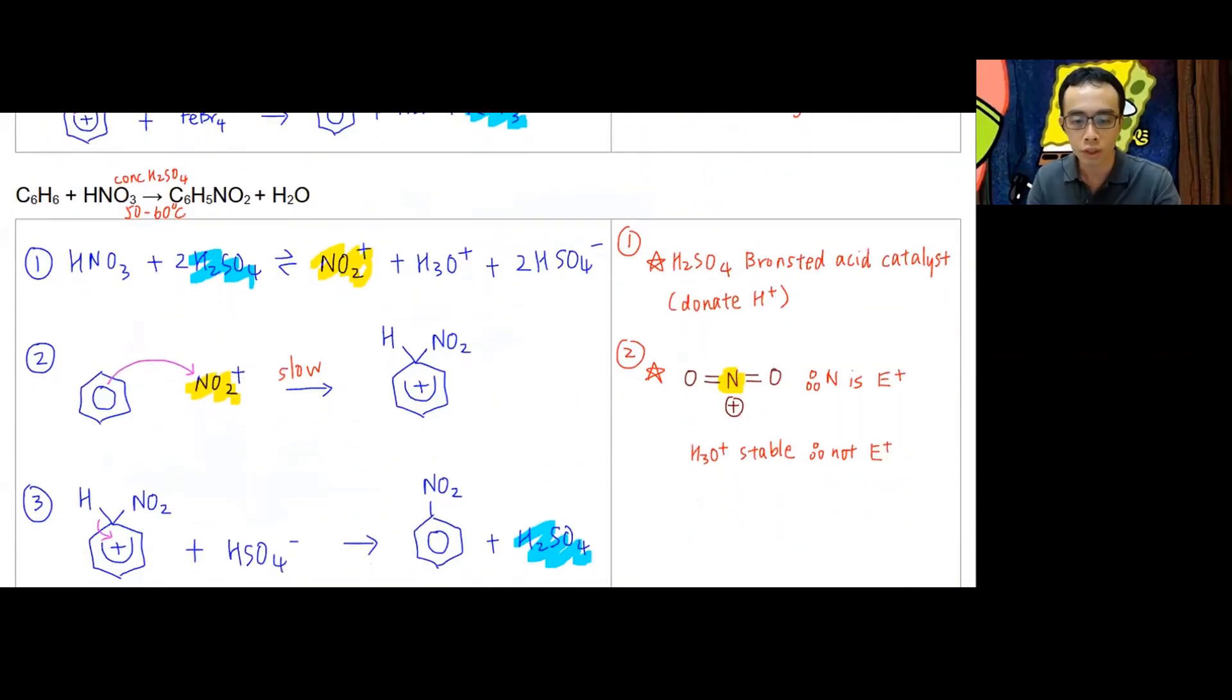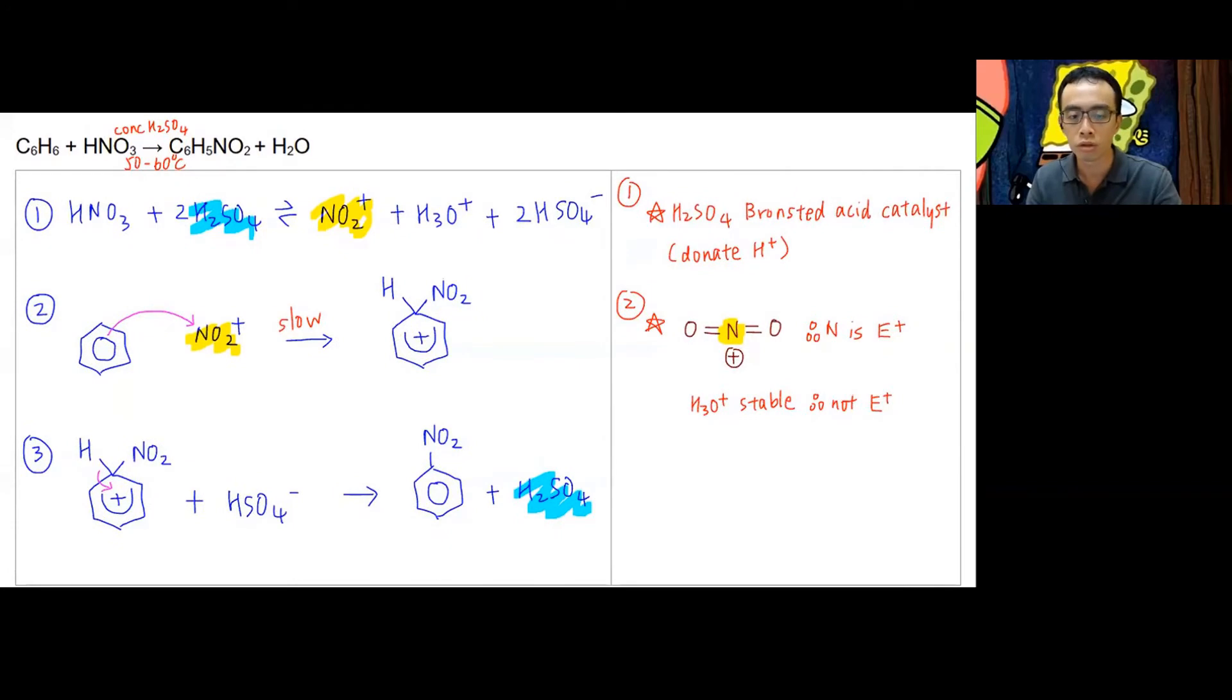If I compare this with nitration, we notice even though the reaction and products look a bit different and the conditions are also different, the steps are effectively the same. First step I generate my electrophile. This one is HNO3 plus 2H2SO4—remember it's concentrated HNO3 in concentrated H2SO4 to give me NO2+, H3O+, and 2HSO4-. The electrophile is NO2+.